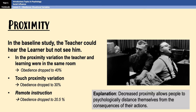The reduced obedience is thought to be because decreased proximity allows people to psychologically distance themselves from the consequences of their actions. When the teacher and the learner were in different rooms, the teacher was less aware of the harm they were causing, and so they were more obedient. In the remote instruction variation, a similar thing happens, but in this case the authority of the experimenter becomes less apparent because he's further away — a bit like when a teacher leaves the room and says 'don't talk, I'll be right back.' Realistically, what are they going to do if you do talk? They're not there. It's the same kind of principle when the experimenter leaves the room.